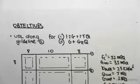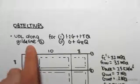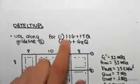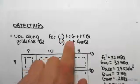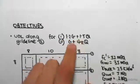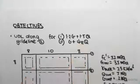Hey guys, the objective of this video is to find the UDL along grid line 1 for load cases 1.2G and 1.2G plus 1.5Q, and G plus psi EQ.